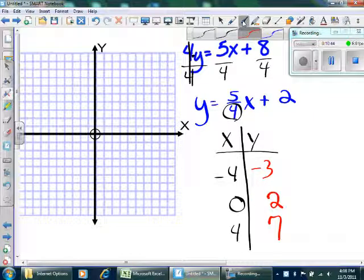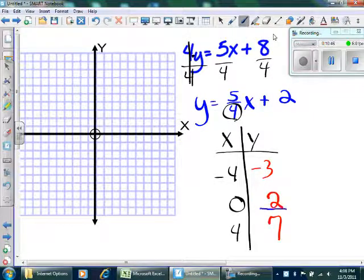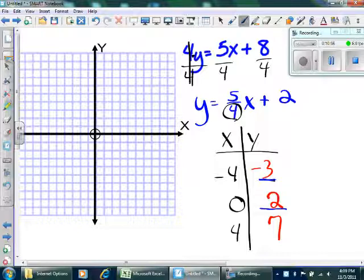That's where I got the 2 from. 5 fourths times negative 4 over 1 would be negative 5. Negative 5 plus 2 is negative 3. I was looking at the wrong equation. And then 5 fourths times 4 is 5, plus 2 is 7. That's where the 7 comes from.